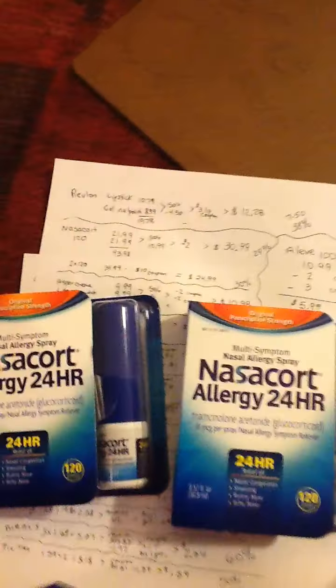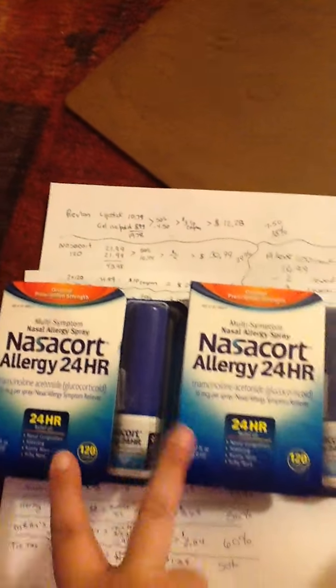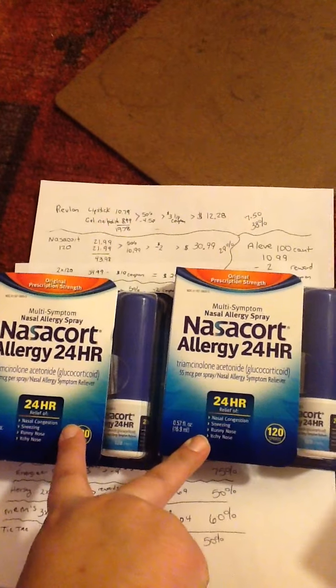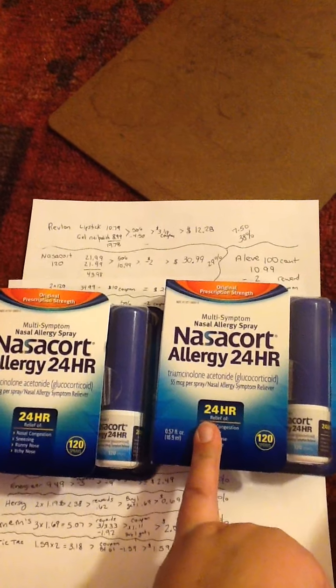I then got Nasacort, which we use. They're normally $21.99 apiece. There's a buy one get one 50% off, plus I had a $2 circular coupon.